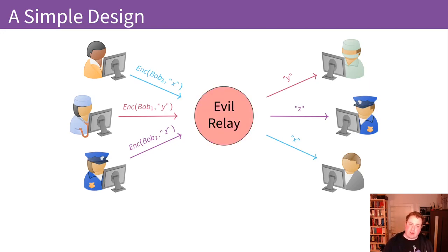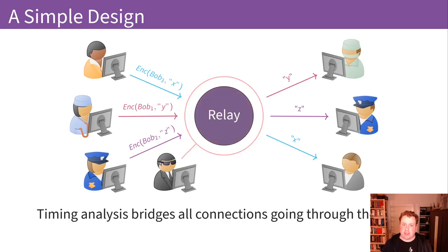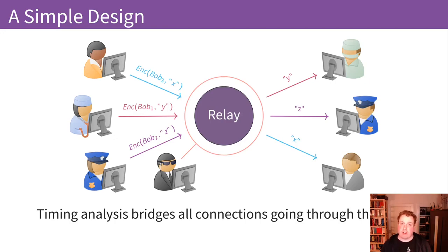One problem with VPNs is that you rely heavily on the intent of the provider. If the provider is malicious, or has made administrative mess-ups like storing logs, this could be a problem. More fundamentally, it's a single point of failure — you only have to attack a single node to gather information about many users. Additionally, because most users send traffic over a single host, an adversary could do timing analysis to correlate encrypted incoming traffic with outgoing traffic and identify which user is responsible for which connections.